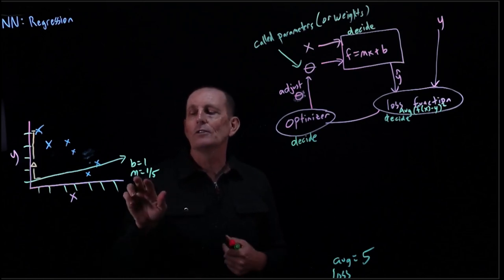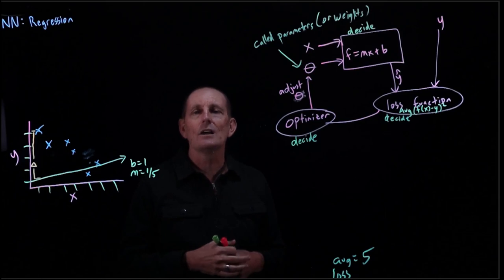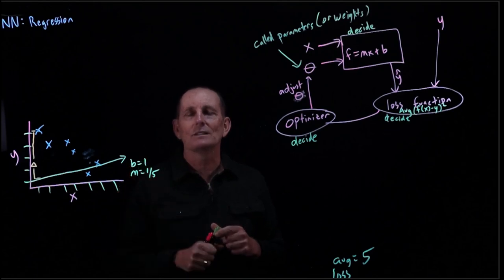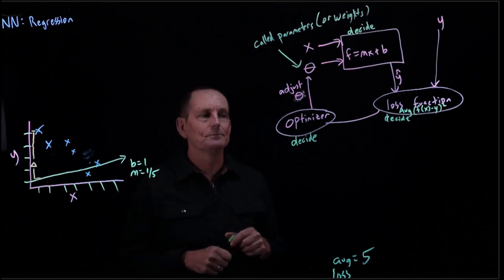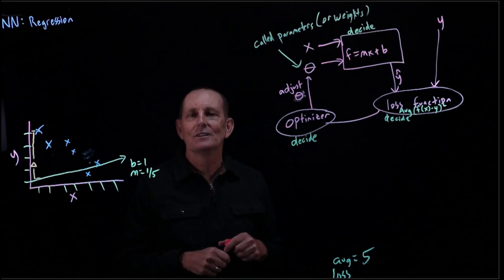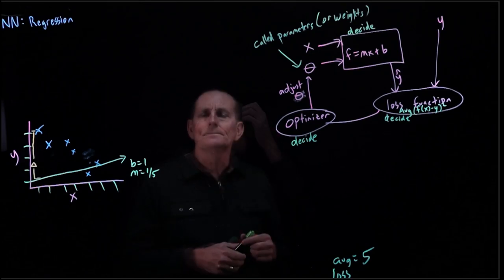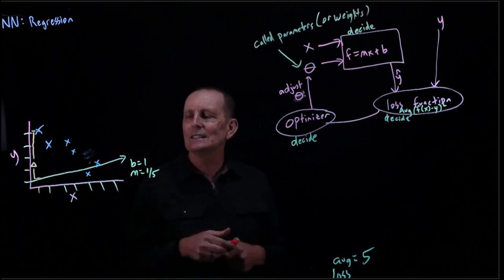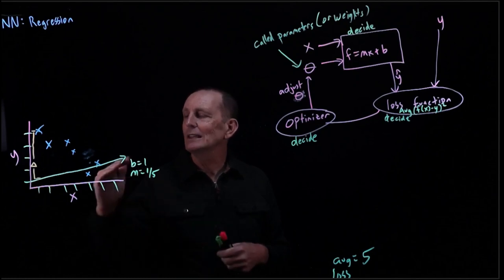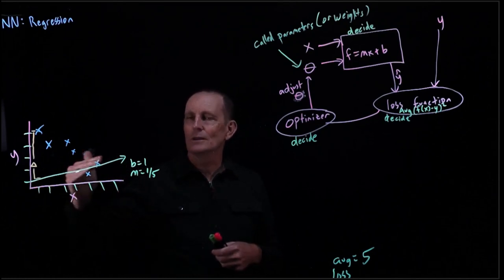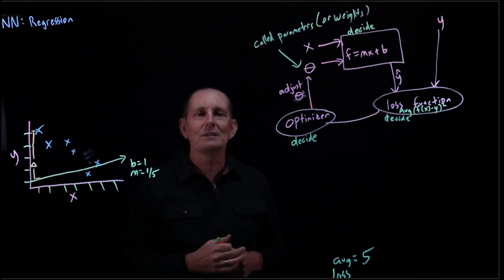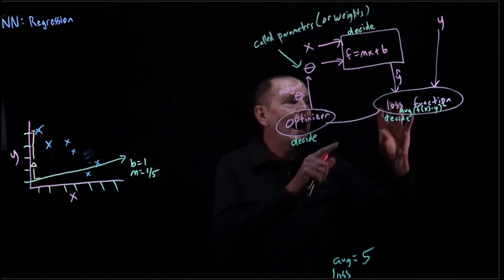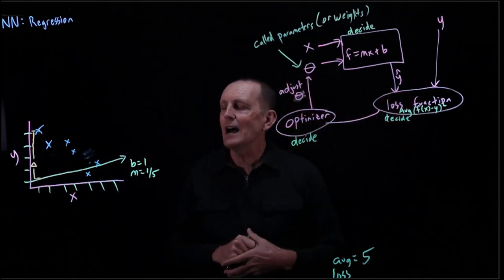We may actually be going in the wrong direction for m for a while because we're in a multi-variable situation, optimizing both b and m simultaneously. Over time increasing b while adjusting m may eventually lead us to the right solution — but the optimizer doesn't have the picture; all it has is the loss function.